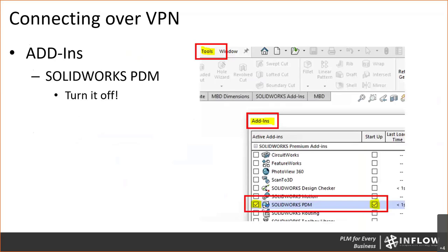If you're connecting over VPN, we need all the bandwidth we can get. The big thing to remember is: turn off that SOLIDWORKS add-in. If you've got questions or problems give us a holler, but I want the bandwidth, so get rid of that add-in. That add-in is really gobbling up a lot of information because it's telling PDM how to talk to the servers.